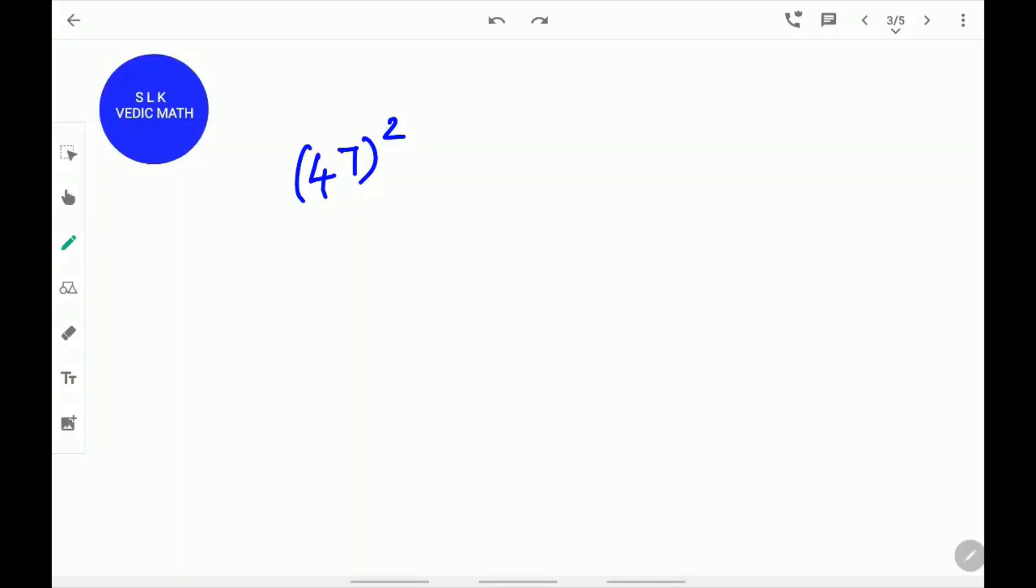Let's try another example. 47 square. First, find the difference of 47 from 50. The difference is 3. Next, do 25 minus 3.